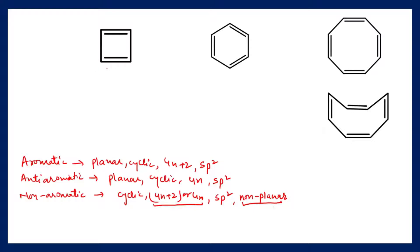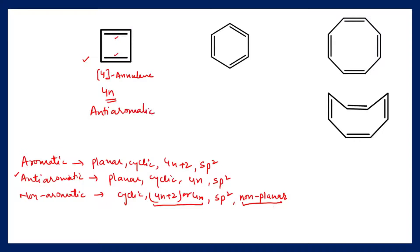Now let us start with the first compound — [4]-annulene. This compound is planar, cyclic, and all carbon atoms are sp2 hybridized. It has 2 pairs of pi electrons, meaning it has 4 pi electrons in its skeleton, so it is following the 4n rule. According to the definition of anti-aromaticity, this compound is following all the conditions for anti-aromaticity, so we can say this compound is anti-aromatic in nature.